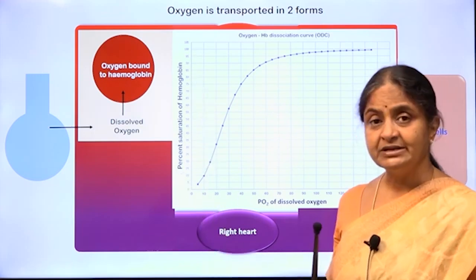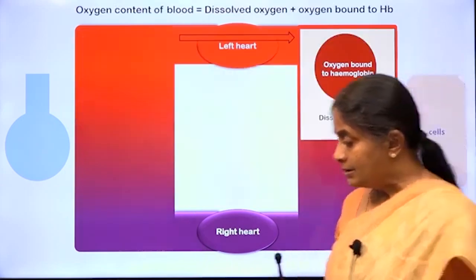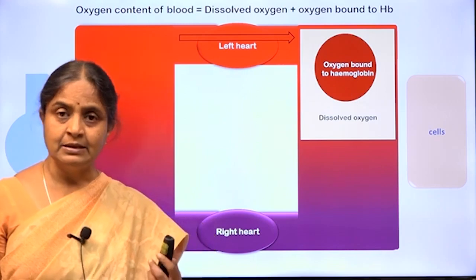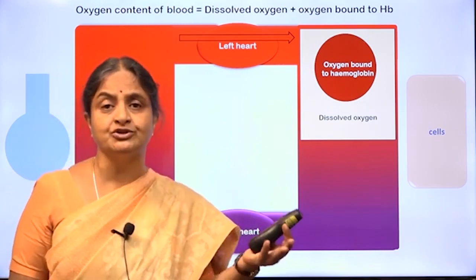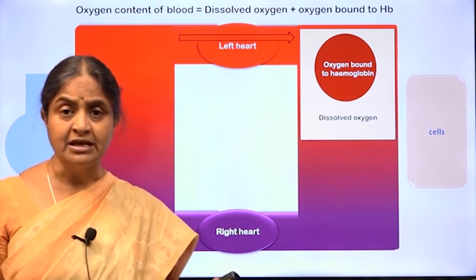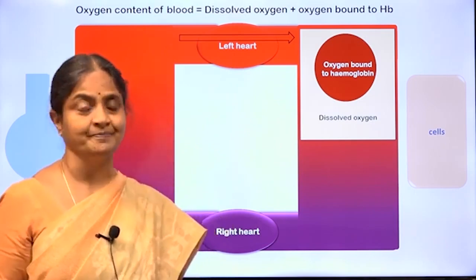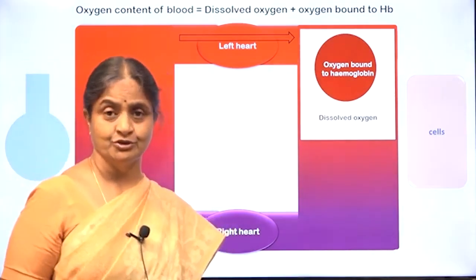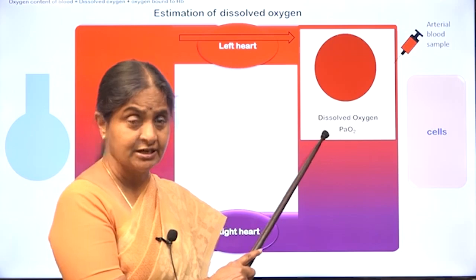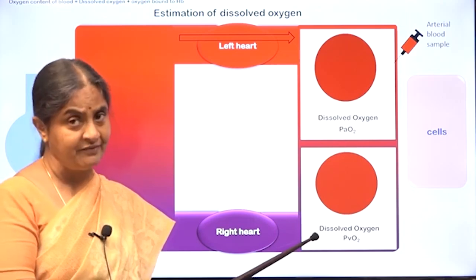On the y-axis is percent saturation of hemoglobin, which we will learn shortly. Dissolved oxygen is estimated as a partial pressure of oxygen. The intuitive understanding would be how much oxygen is dissolved in 100 ml of blood — milliliters of oxygen per 100 ml blood is comprehensible. Partial pressure of oxygen is an estimate of dissolved oxygen which is easier to measure.